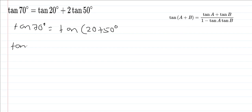Keeping the LHS the same, we can expand this using the identity: tan A plus tan B over 1 minus tan A tan B.